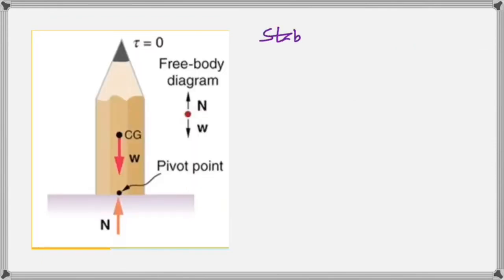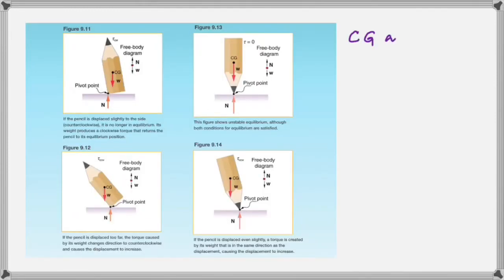Consider a pencil in stable equilibrium: its center of gravity is above the base, the weight acts vertically down, and the normal reaction is the pivot — forces are balanced and the vertical line through the center of gravity is inside the base. If you tilt it slightly, that vertical line is still inside the base. But if you tilt it too much, the vertical line moves outside the base — that's unstable and the pencil falls.